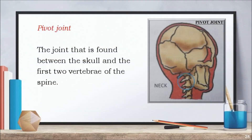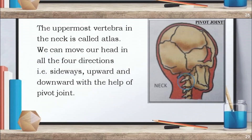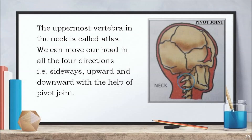The pivot joint is found between the skull and the first two vertebrae of the spine. The uppermost vertebra in the neck is called the atlas. We can move our head in all four directions — that is sideways, upward and downward — with the help of the pivot joint.